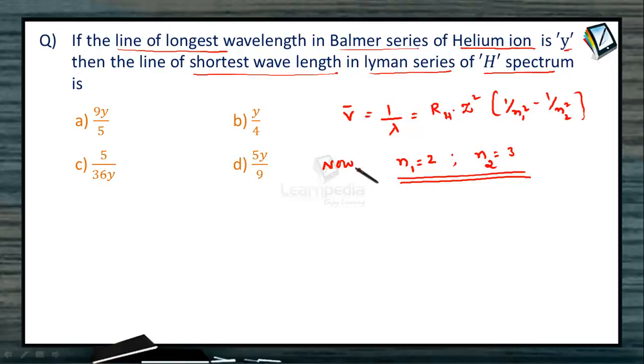Thereby, we are given already line of longest wavelength in Balmer series of helium ion. For helium ion, Z is equal to 2. The wavelength is given as Y.